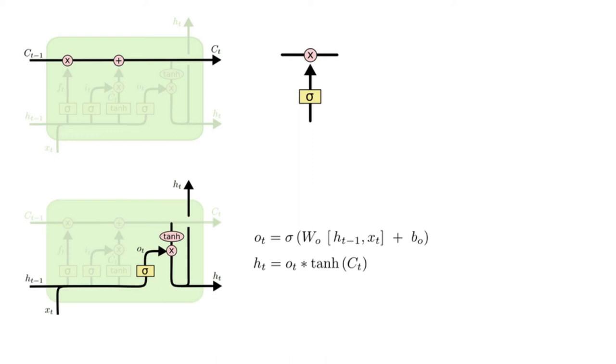For the language model example, since it just saw a subject, it might want to output information relevant to a verb in case that's what is coming next. For example, it might output whether the subject is singular or plural so that we know what form of a verb should be conjugated into if that's what's following next.